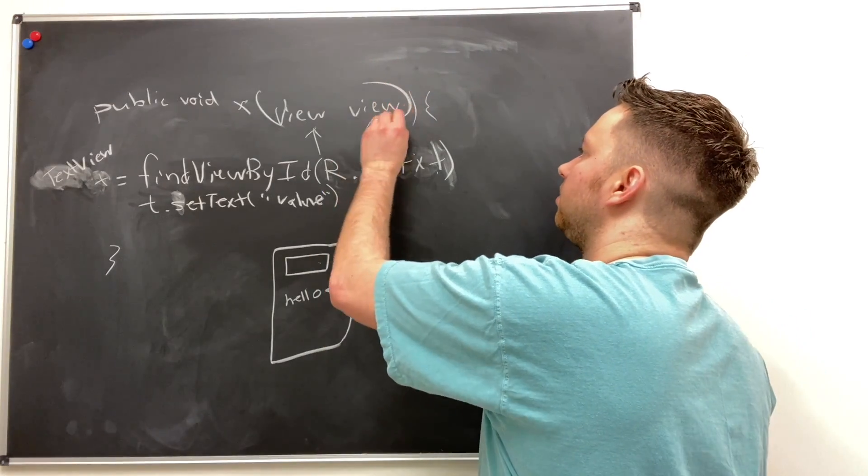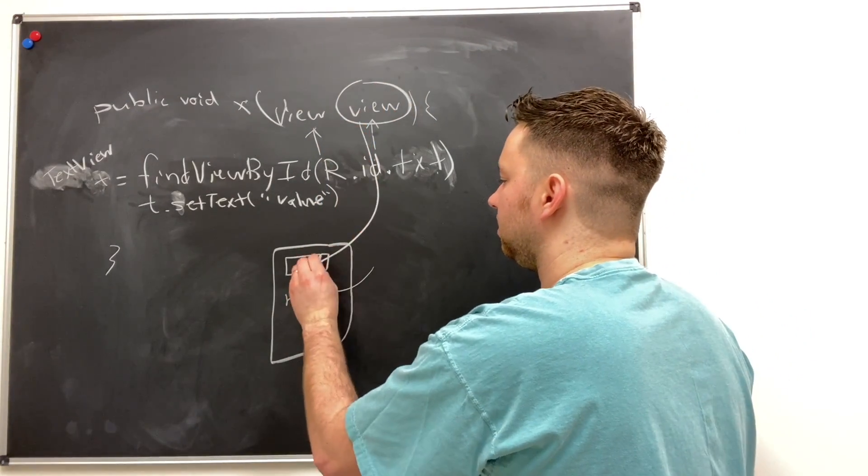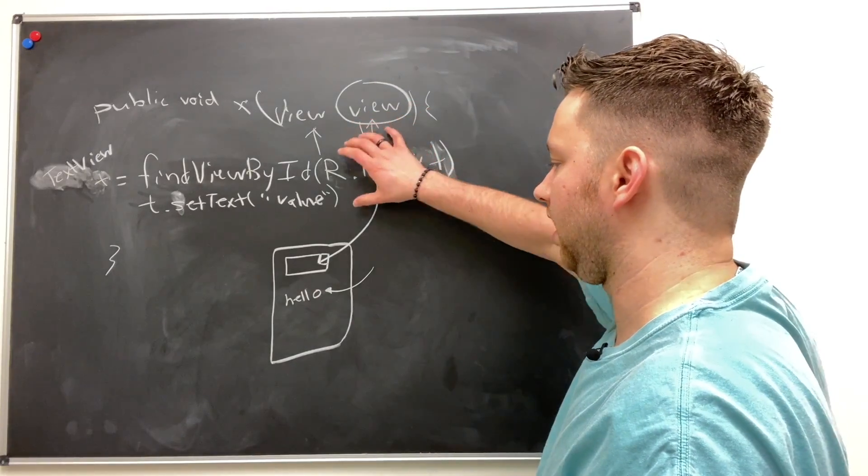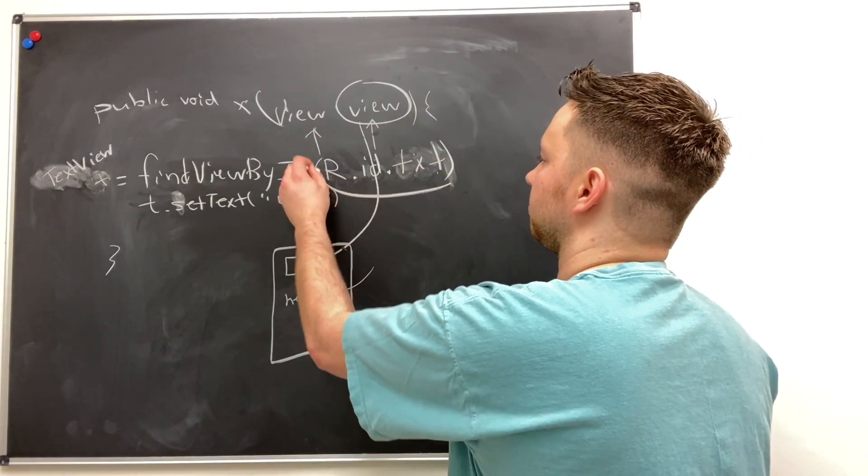So this one here that refers to the button, but we're able to access a view other than the button by using this right here.